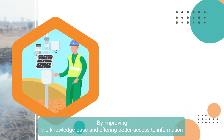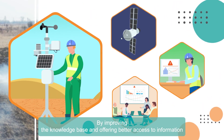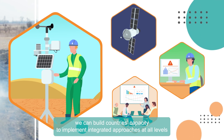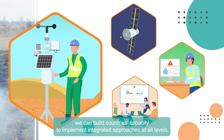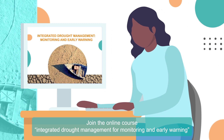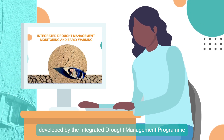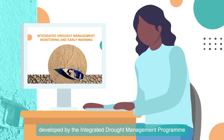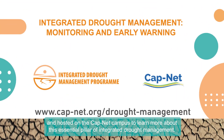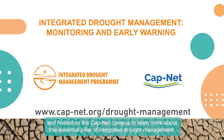By improving the knowledge base and offering better access to information, we can build countries' capacity to implement integrated approaches at all levels. Join the online course Integrated Drought Management for monitoring and early warning, developed by the Integrated Drought Management Program and hosted on the CapNet campus, to learn more about the essential pillars of Integrated Drought Management.